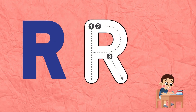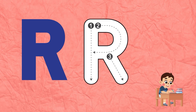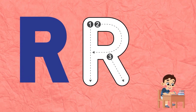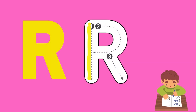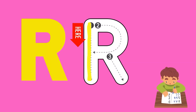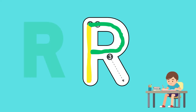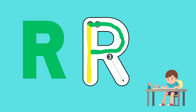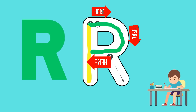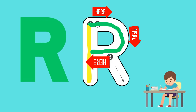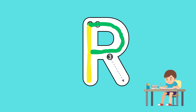Dear kids, as you know, R is for rainbow. Now let's start to write alphabet R. In alphabet R there are three steps. Step one: start from point one and draw a line downwards. Now let's start step two: start from point two, draw a round curve line clockwise and connect it to the center of line one. You have completed the second step.